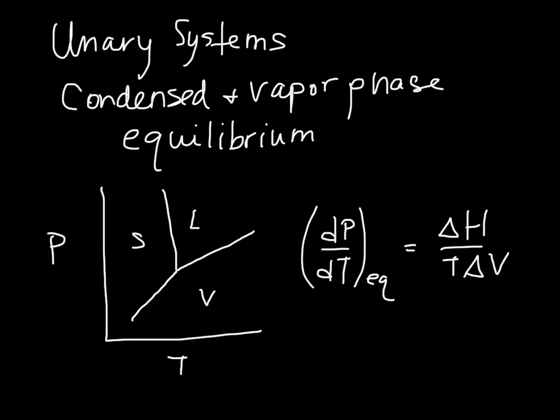However, when we have the equilibrium between a condensed phase, which would be either the solid or the liquid, with the vapor phase, so that's this line here and this line here, we can simplify this equation a little bit, and we do that through this term delta V.